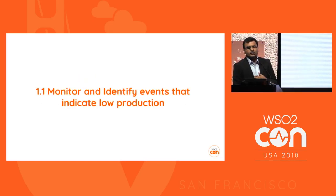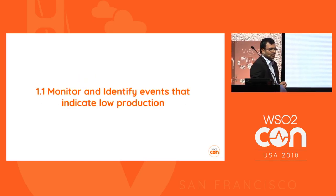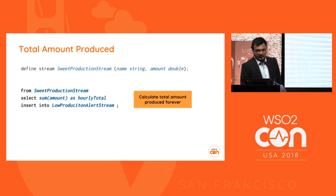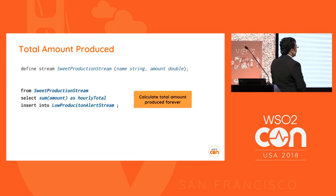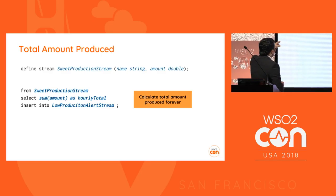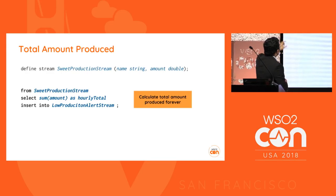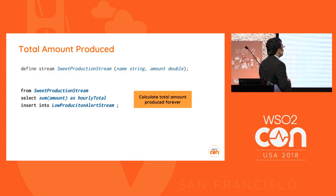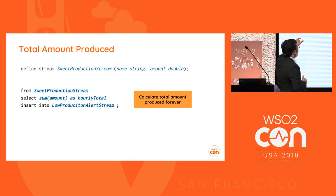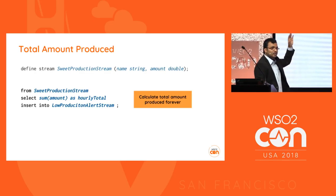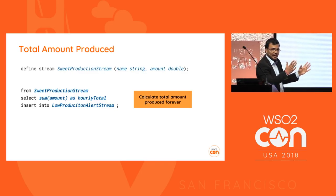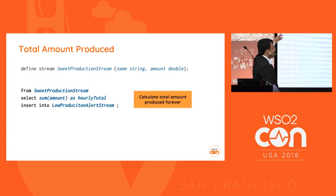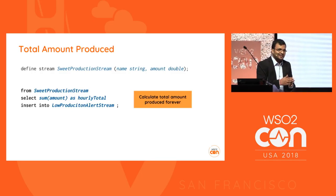To identify that, we divide the use case into two phases. Phase one: monitor and identify events that indicate low production. We have a stream called suite production stream with fields 'name' and 'amount.' We calculate the sum of amount as an hourly total and insert into a stream called low production alert stream. Without any window, aggregation calculates from the first event forward indefinitely.